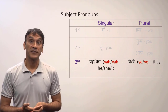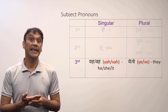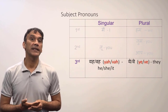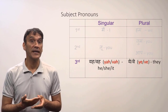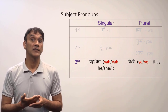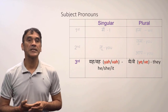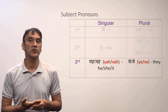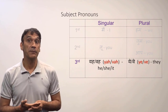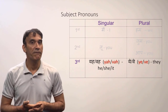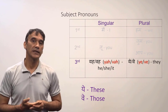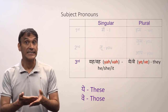The third person plural subject pronouns in Hindi are 'yay' and 'way,' meaning 'they' in English. In colloquial and conversational Hindi, people often do not make a distinction between third person singular and plural — they use 'yay' and 'wo' for both. The distinction between 'yay' and 'way' is based on proximity to the speaker: 'yay' is for people physically close, and 'way' is for people far away — similar to 'these' and 'those' in English.